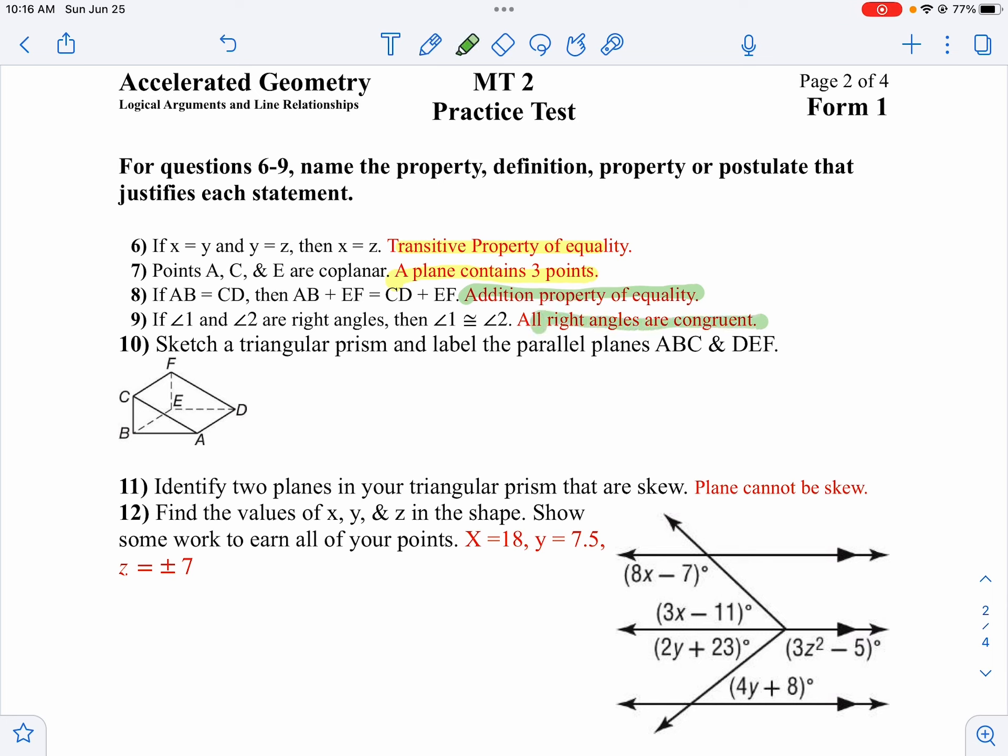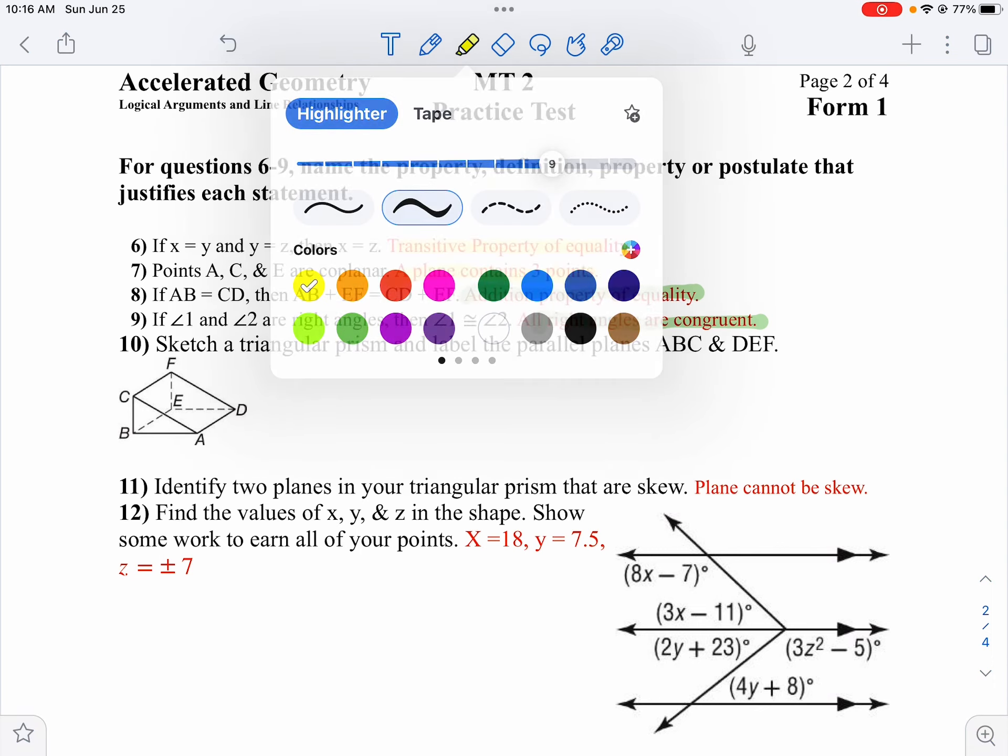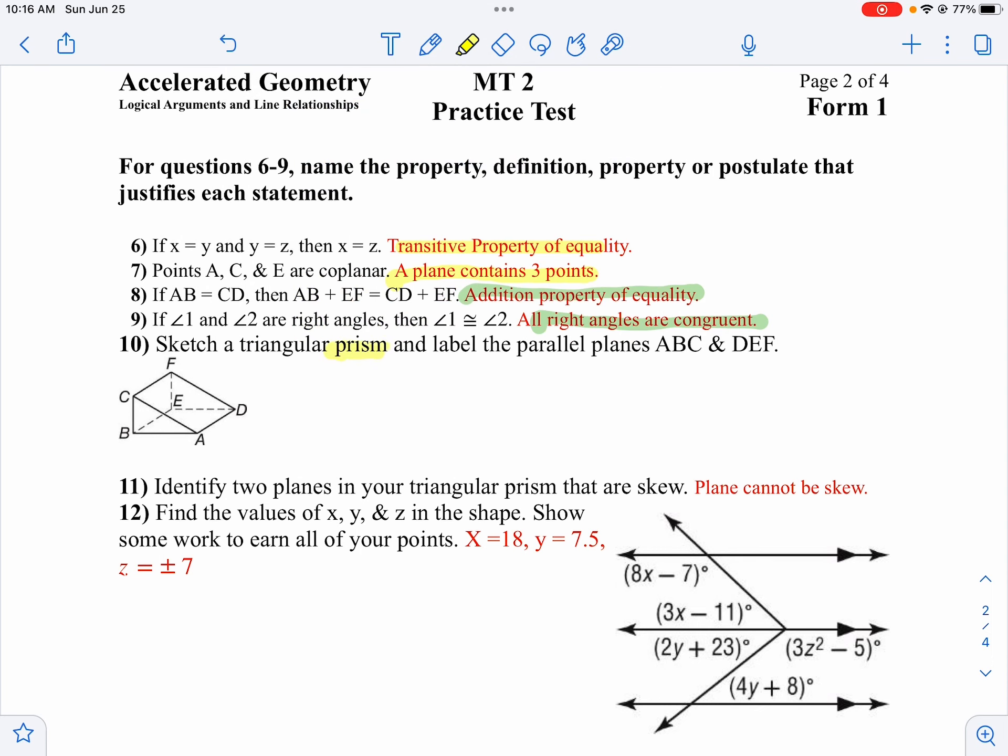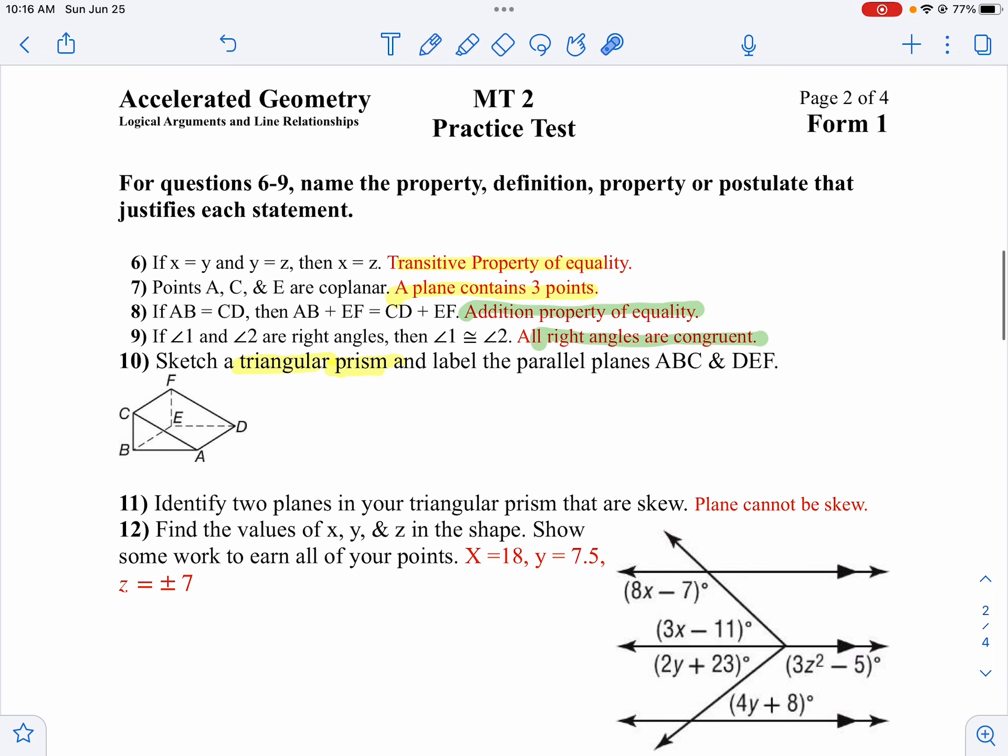On number 10, we want to sketch a triangular prism. The key word here is prism, so we know it's got to be the same on both sides, and triangles are our bases. Notice we've got a triangle in front and a triangle here. So those two triangles are parallel, and then we just connect them.